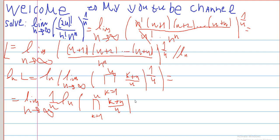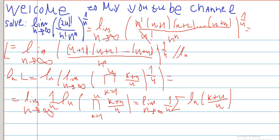This equals a limit as n goes to infinity of 1 over n, and then the product becomes a sum of ln of k plus n divided by n as k goes from 1 to n.